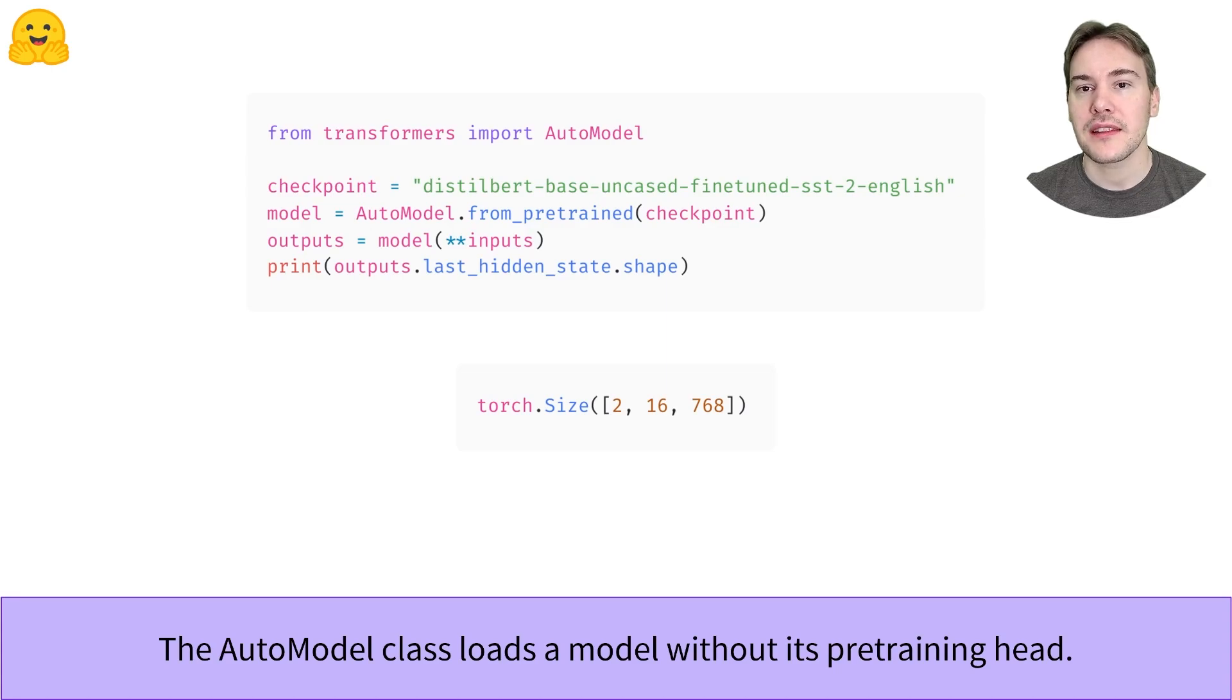That is, the part of the model that is left once the pretraining head is removed. It will output a high-dimensional tensor that is a representation of the sentences passed, but which is not directly useful for our classification problem. Here, the tensor has two sentences, each of 16 tokens, and the last dimension is the hidden size of our model, 768.